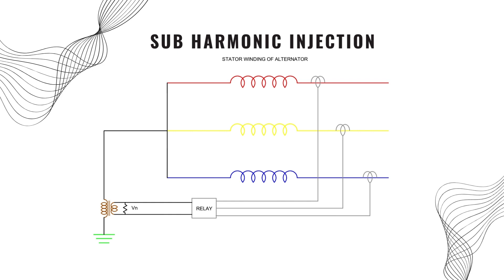Let's understand the working principle of this method. Subharmonic frequency means the frequency is less than the fundamental frequency. Here, 20 hertz frequency is injected through a bandpass filter across the secondary terminal of the NGT and a CT is connected to measure the current.